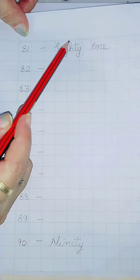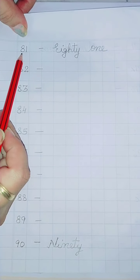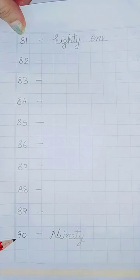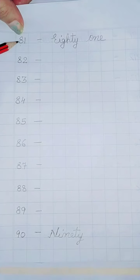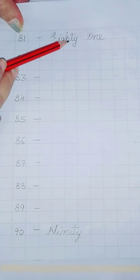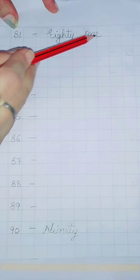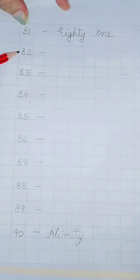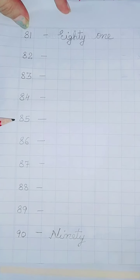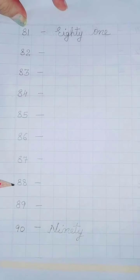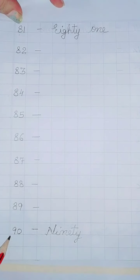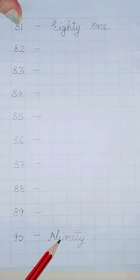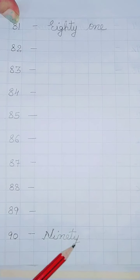Again you will take a new page and you will write 81 to 90 numbers. E-I-G-H-T-Y-80-O-N-E-1, 81. So now you will write the spellings of 82, 83, 84, 85, 86, 87, 88, 89 and then 90. 90 the spelling is N-I-N-E-T-Y.